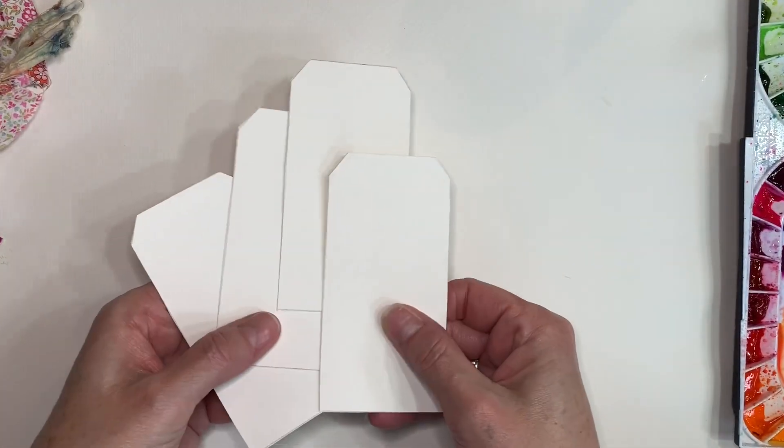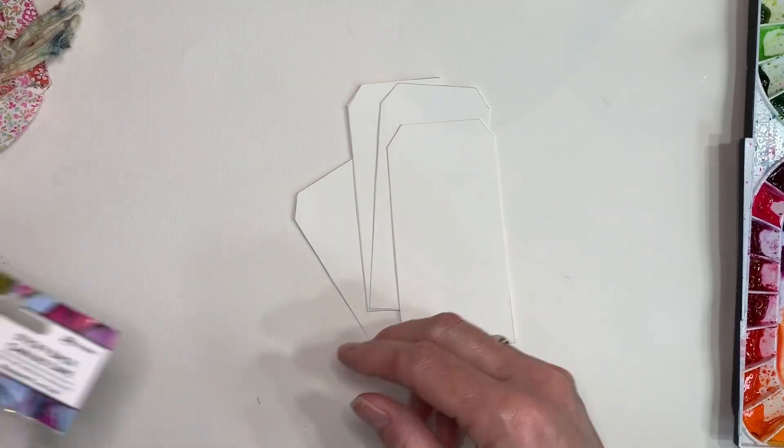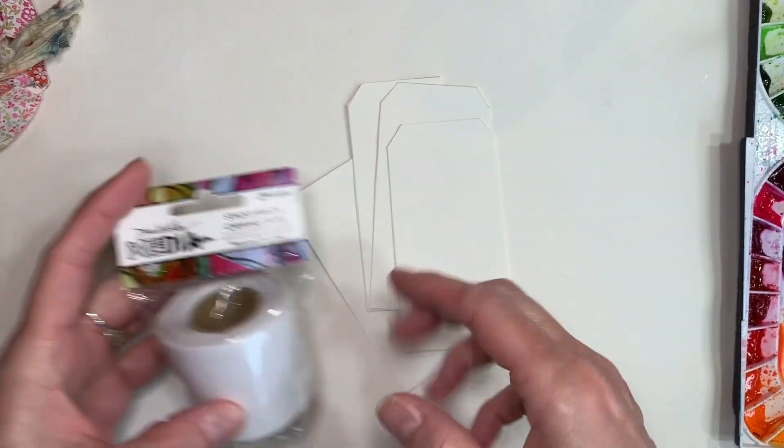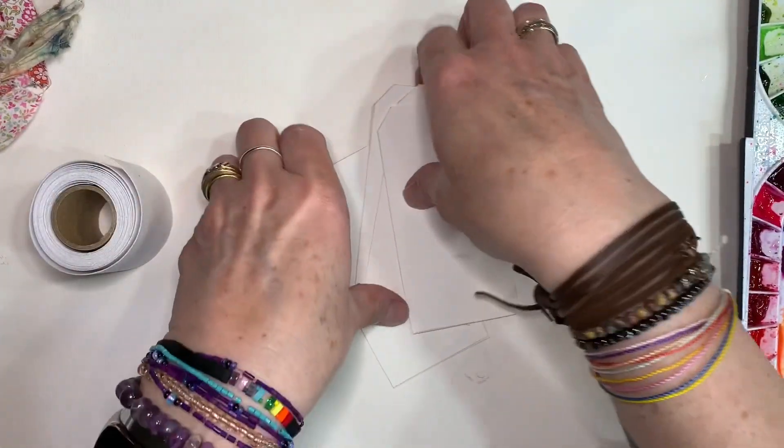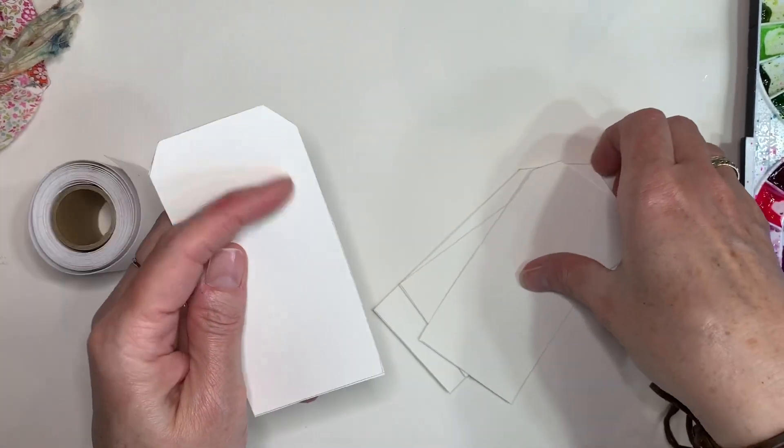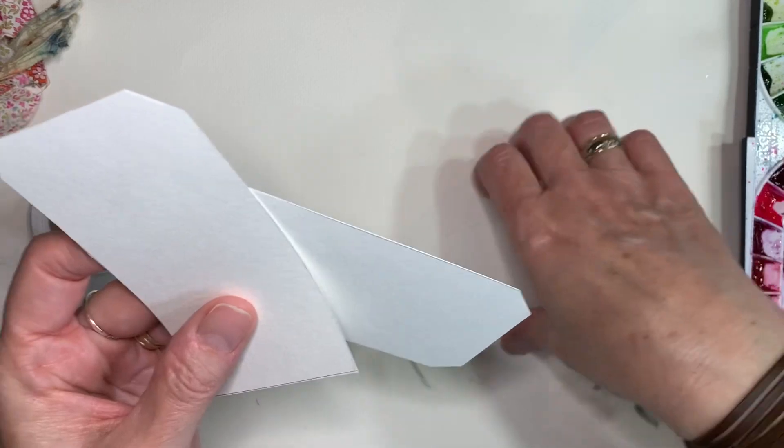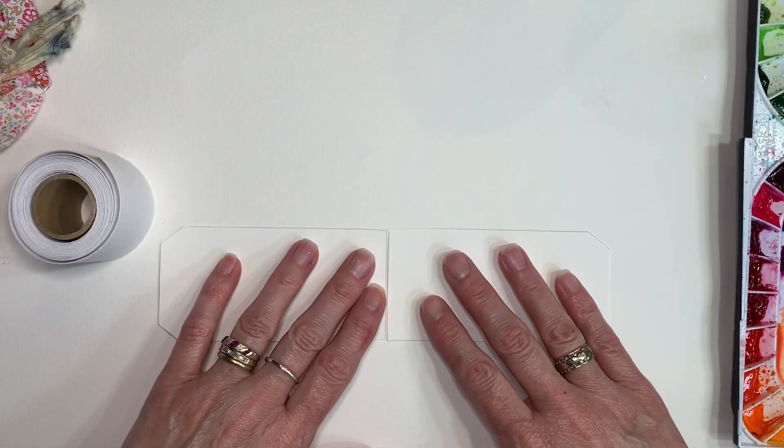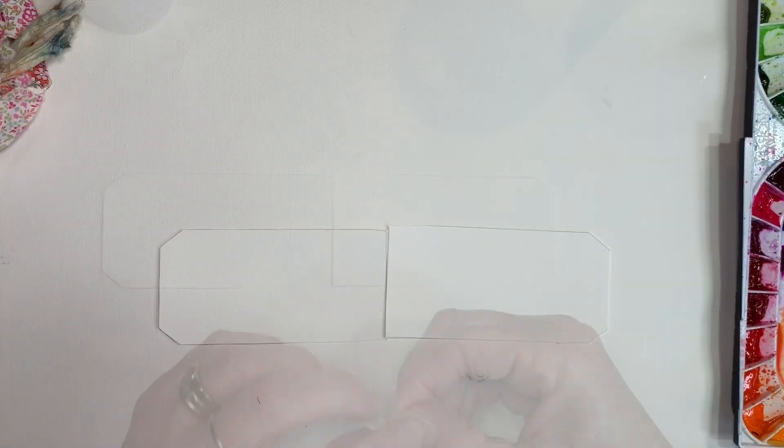Now that you have your tags cut out, what we're going to do next is we're going to tape them together end to end. I used the sticky back canvas tape from Dina Wakely. You could use masking tape. I wouldn't recommend washi tape because once you really get these tags wet, I think that it wouldn't stick as well.